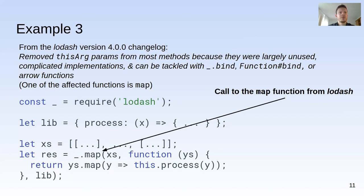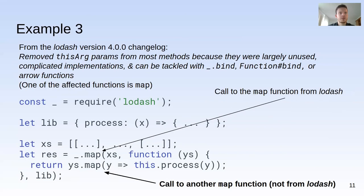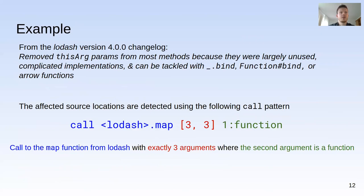The program on this slide uses the map function from lodash, which is affected by this breaking change, so Tapir should produce an alarm for this call. Notice that it also uses another function named map, but since that function does not come from lodash, Tapir should not report an alarm for it.